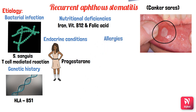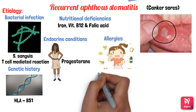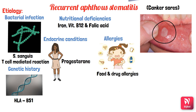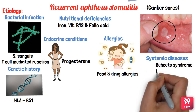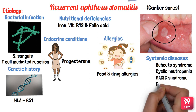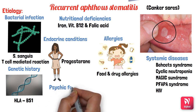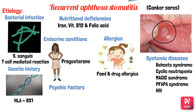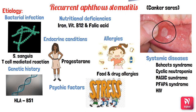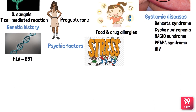Allergic factors such as asthma, hay fever, or food and drug allergies can elicit an allergic phenomenon resulting in aphthous ulcers. These ulcers can also be part of systemic diseases like Behçet's syndrome, cyclic neutropenia, MAGIC syndrome (major aphthae and generalized inflamed cartilage), PFAPA syndrome (periodic fever, aphthae, pharyngitis, and cervical adenitis), and HIV infection. Additionally, psychic factors — constant stress — can increase the tendency for aphthous ulcer formation.